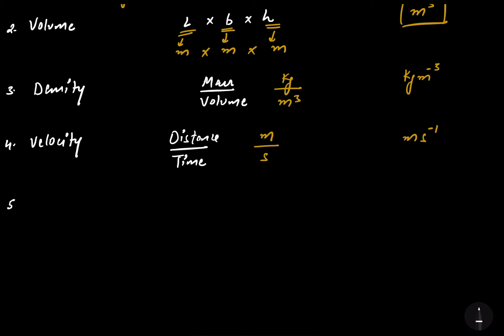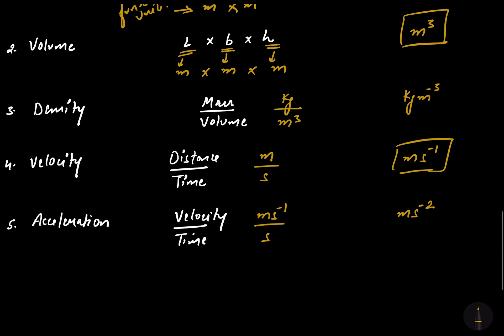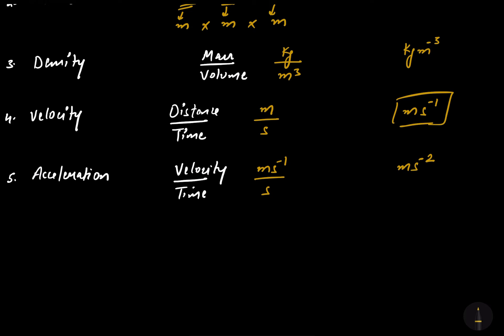The fifth quantity is acceleration. The formula for acceleration is velocity per unit time. The unit of velocity is meter per second and the unit of time is second, so the unit comes out to be meters per second square. Hopefully you're getting my points — I'm using the derived unit of velocity in acceleration, and earlier I used the derived unit of volume in density. So all these are derived from each other — that's why they are called derived units.